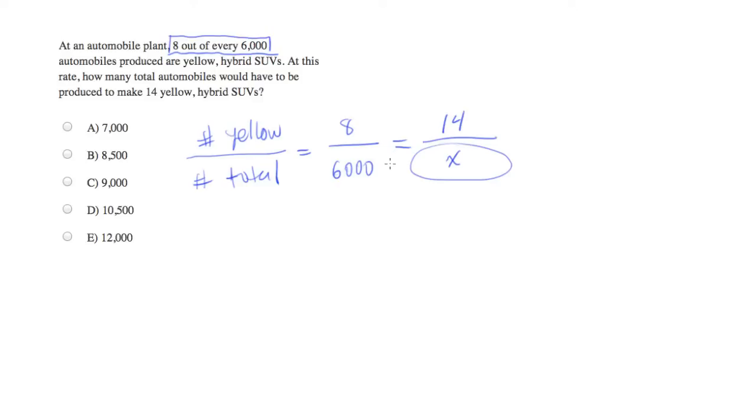And at this point we simply need to solve this problem. Typically when people set up proportions, the next step is what people call cross multiply, which is you take the lower left number multiply by the upper right, you take the lower right and multiply it by the upper left.